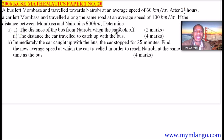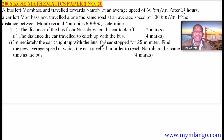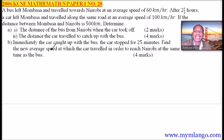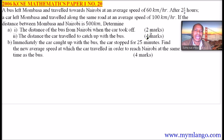The distance of the bus from Nairobi when the car took off — two marks. Roman number 2: the distance the car travelled to catch up with the bus — four marks. Part B: immediately the car caught up with the bus, the car stopped for 25 minutes. Find the new average speed at which the car travelled in order to reach Nairobi at the same time as the bus. This is a section 2 question — it should add up to 10 marks.